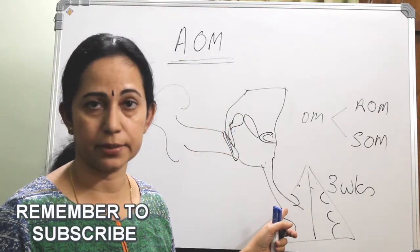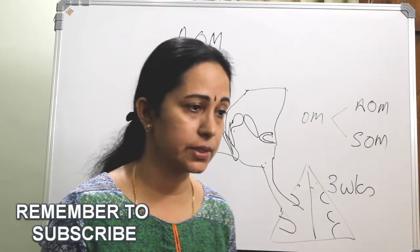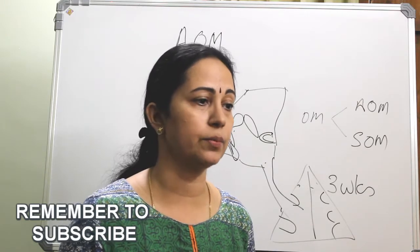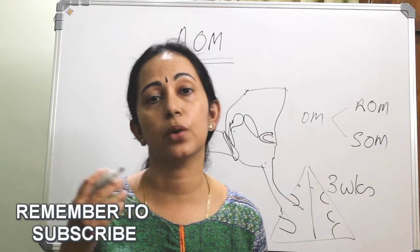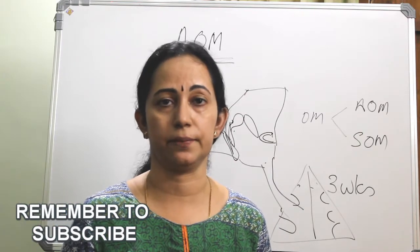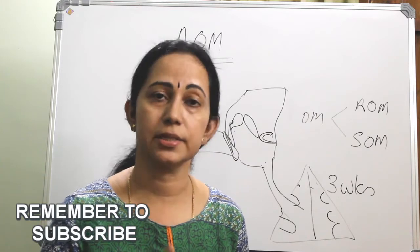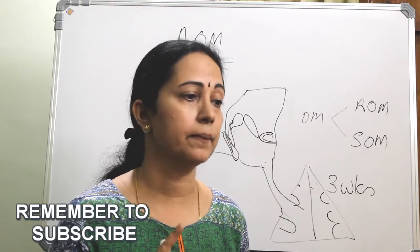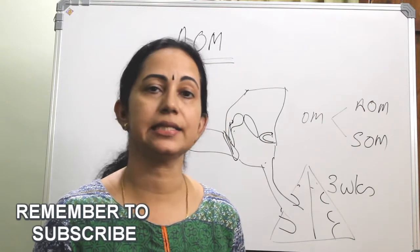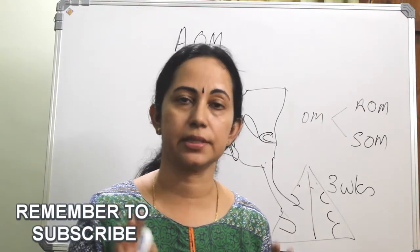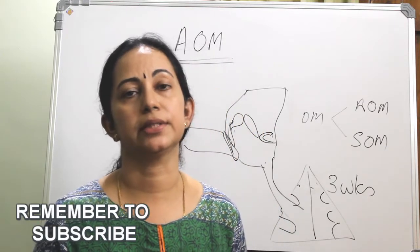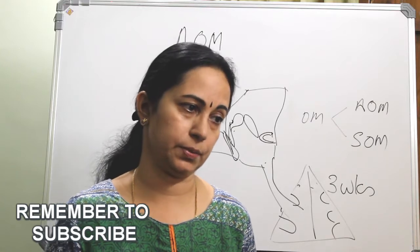Some more associated conditions: cleft palate, immunodeficiency disorders, ciliary dyskinesia, cystic fibrosis, and Down syndrome. In all these conditions, there is ciliary dysfunction. So in cystic fibrosis, cleft palate, immunodeficiency, ciliary dyskinesia, and Down syndrome, the child or adult has a higher chance of getting acute otitis media.